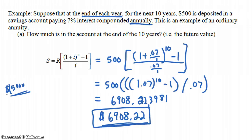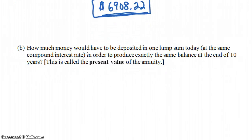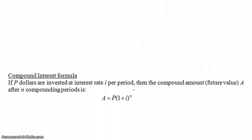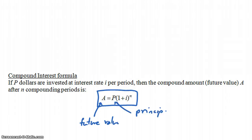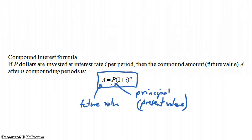If you put in $5,000 as a lump sum right now, it would grow to more than $6,908. So the answer must be less than $5,000. We use the compound interest formula: A = P × (1 + i)^N. Here A is the future value and P is the principal (present value). We know A = $6,908.22, i = 0.07, and N = 10. We need to solve for P.